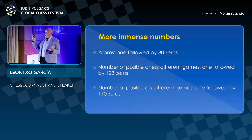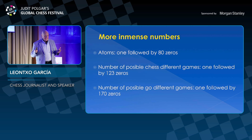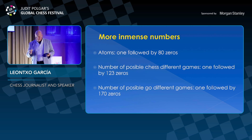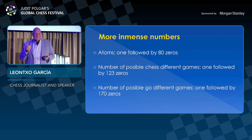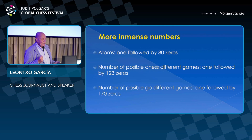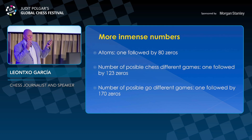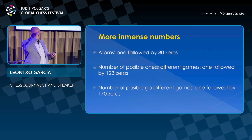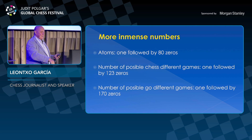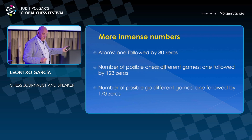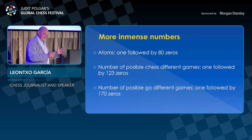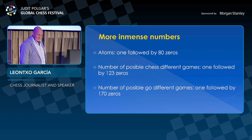Chess and Go have made a big contribution, and here is something important I didn't mention: proteins are composed of amino acids, and the number of possible combinations of amino acids inside a protein is a very big number — like those numbers we discussed earlier. So chess and Go are contributing very much to the progress of science. Thank you very much.